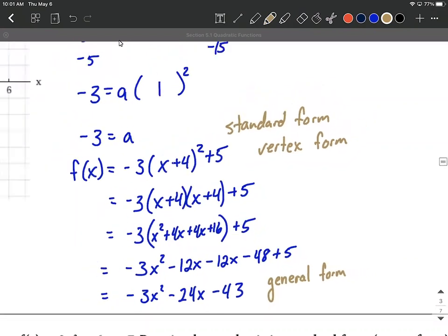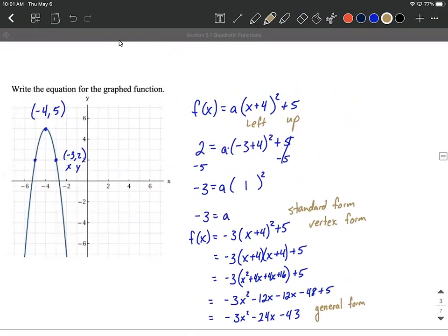So I always find this to be the easiest way to go about finding these functions. I start with the vertex, find one additional point, use what we know about transformations to set this up, and then fill in our additional point, leaving us only a to solve for.